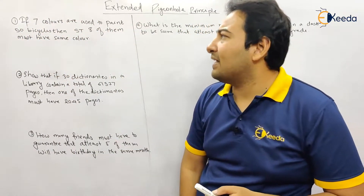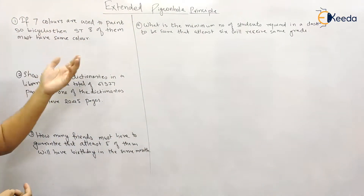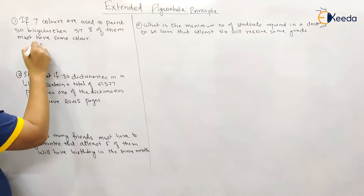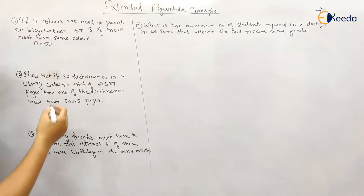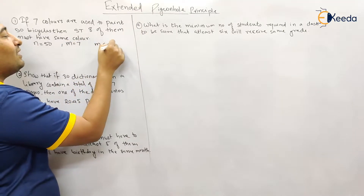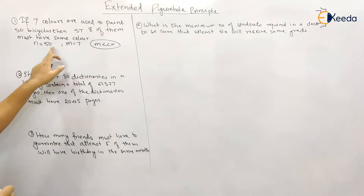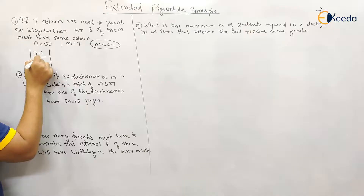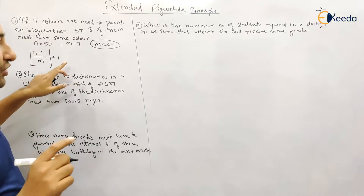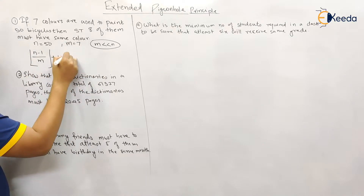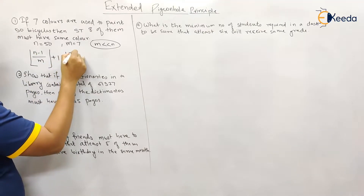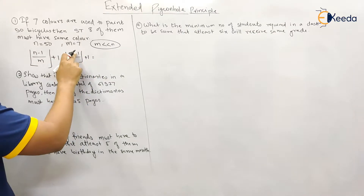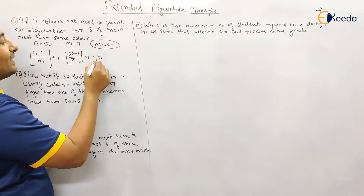Problem 1: Seven colors are used to paint 50 bicycles. There are 7 colors and 50 bicycles — the difference is large, so extended pigeonhole applies. n (pigeons) = 50 bicycles, m (pigeonholes) = 7 colors. The formula is floor((n − 1) / m) + 1, which gives floor((50 − 1) / 7) + 1 = floor(49 / 7) + 1 = 7 + 1 = 8.